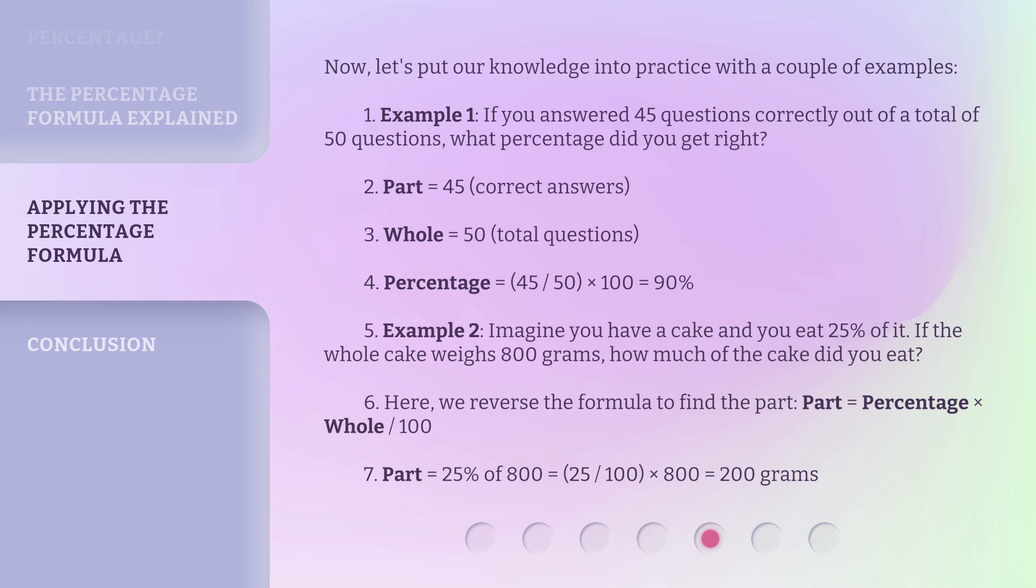Here, we reverse the formula to find the part. Part = Percentage × Whole / 100. Part = 25% of 800 = (25/100) × 800 = 200 grams.